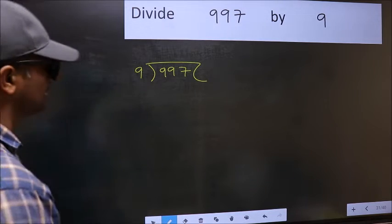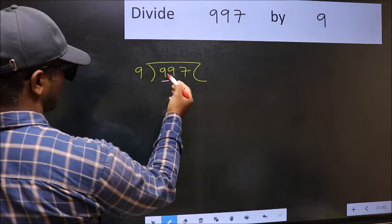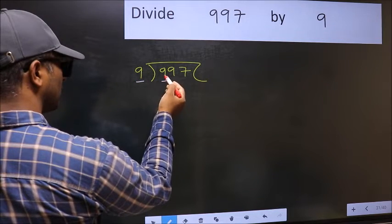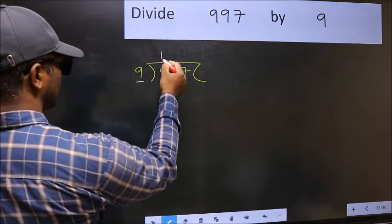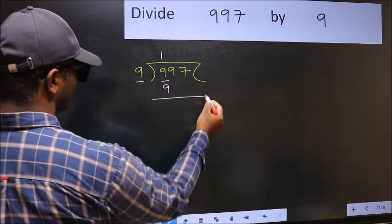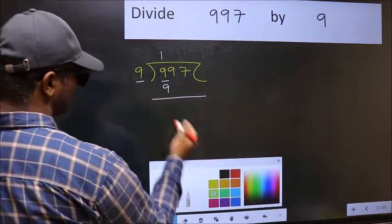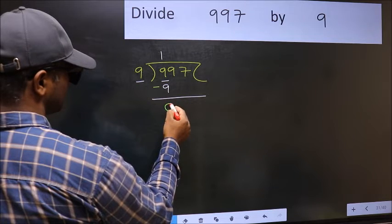Next, here we have 9 and here also 9. When do we get 9 in 9 table? 9 once, 9. Now you should subtract. 9 minus 9, 0.